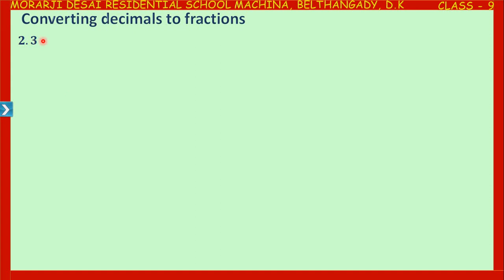While converting into fractions, we have a numerator and a denominator. First, remove the decimal point and write the result in the numerator. If I remove the decimal point of 2.3, that becomes 23. In the denominator, look at the place value of the digit after the decimal point — that is tenths. So you have to write 10. Therefore, 2.3 is equal to 23 over 10.